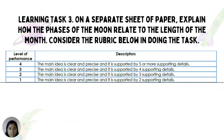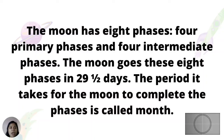For Learning Task Number 3, on a separate sheet of paper, explain how the phases of the moon relate to the length of the month. Consider the rubric provided. The possible answer: The moon has 8 phases — 4 primary phases and 4 intermediate phases. The moon goes through these 8 phases in 29 and a half days. The period it takes for the moon to complete the phases is called a month.